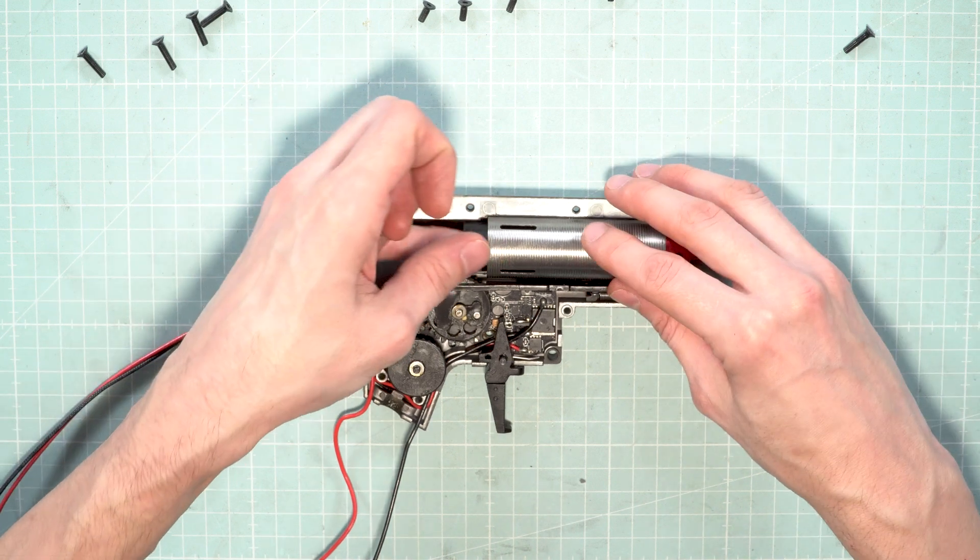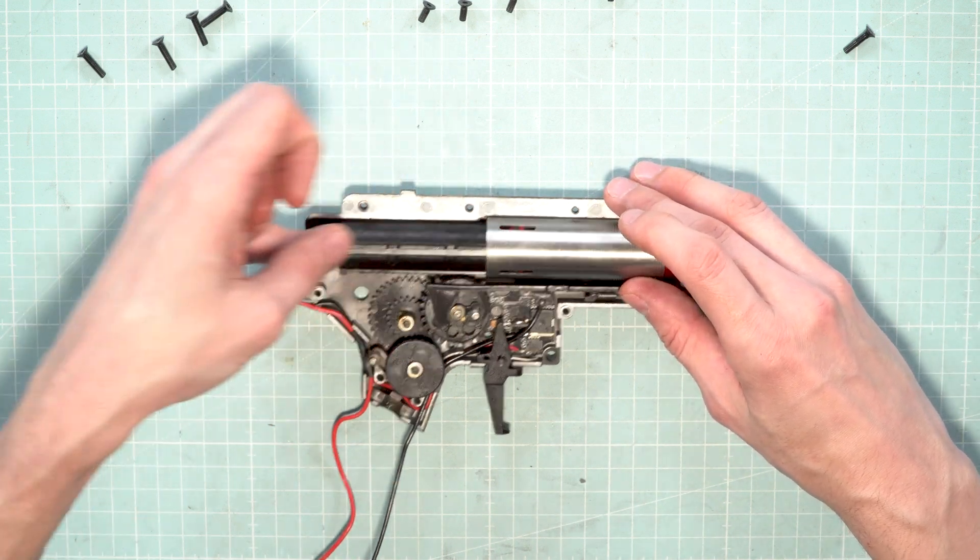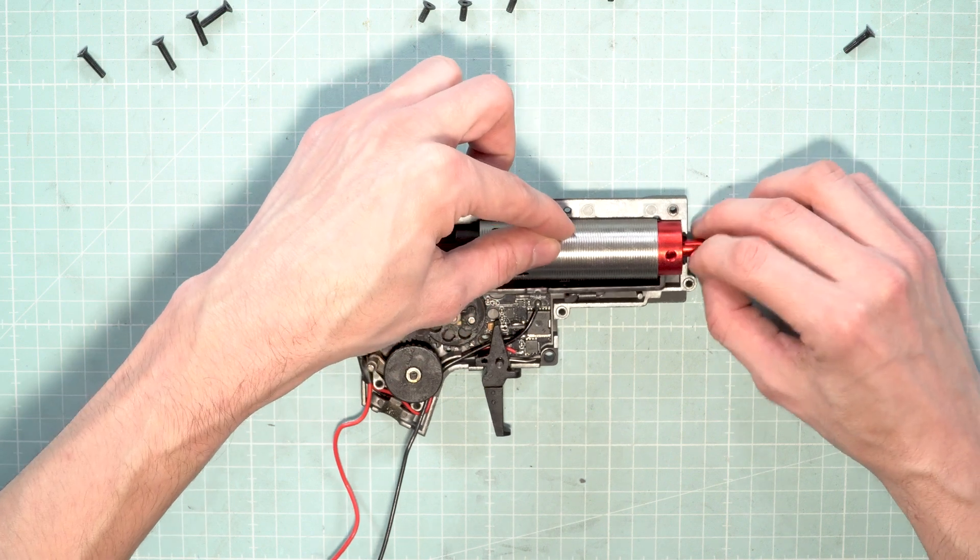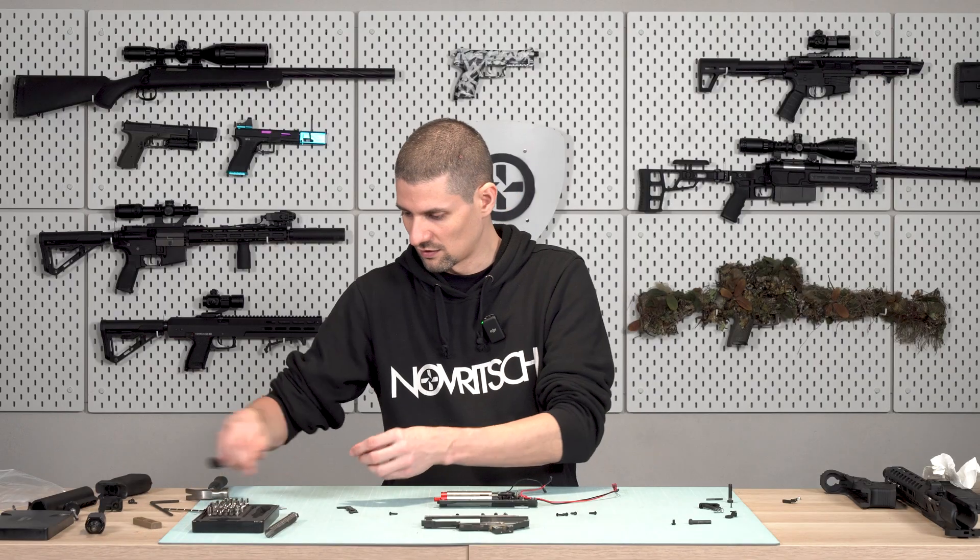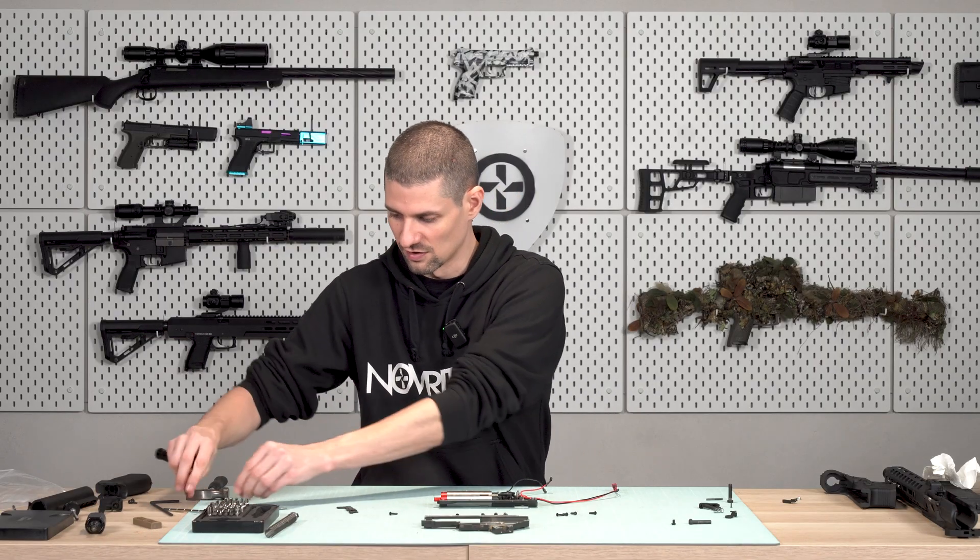Now that everything is in place, we check if the piston is moving freely, which it does. The nozzle is moving freely, which it does. The only other thing now that we need to do is to tension the spring itself.